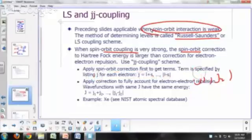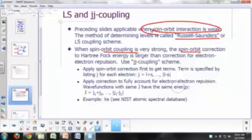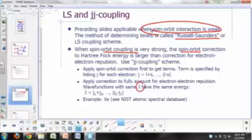And then once you apply the correction to fully account for electron-electron repulsion, then the terms that have the same J will have the same energy. So your J's would now be J1 plus J2 all the way down to J1 minus J2 if you have two electrons in your electron configuration.